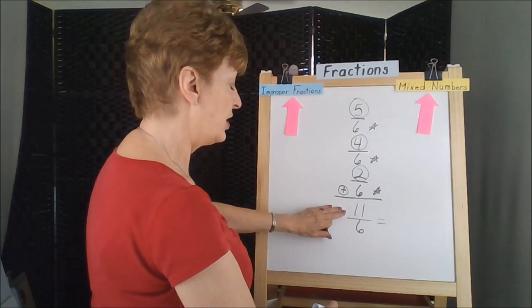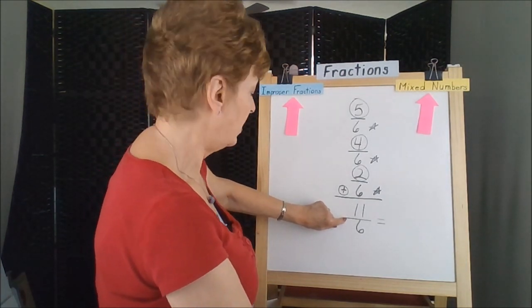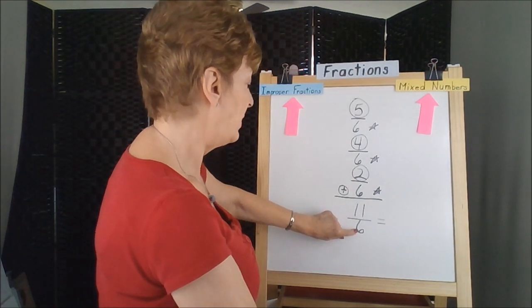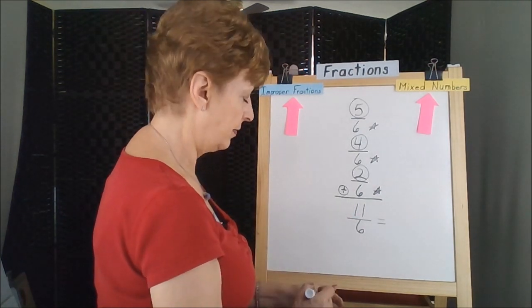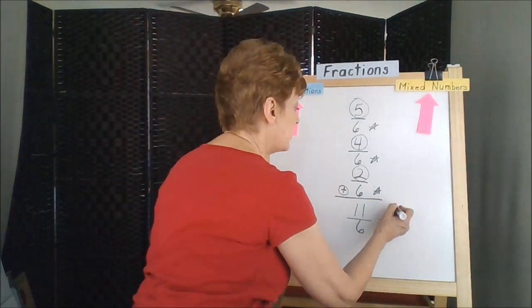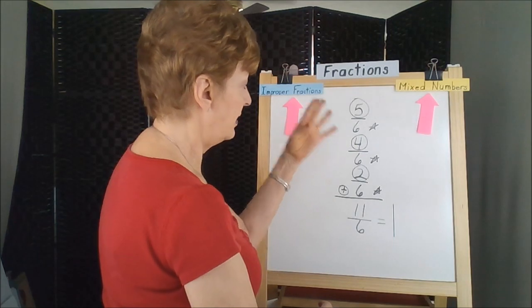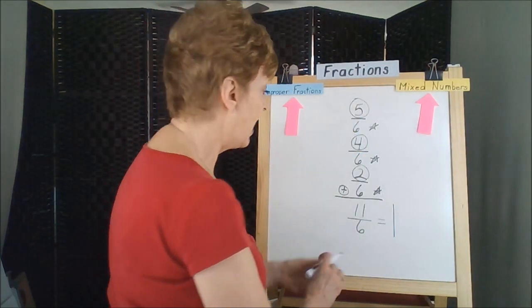We do that through division because this fraction line means division. How many times, how many sixes can you get out of eleven? Well, six times one is six, seven, eight, nine, ten, eleven. There are five extras.